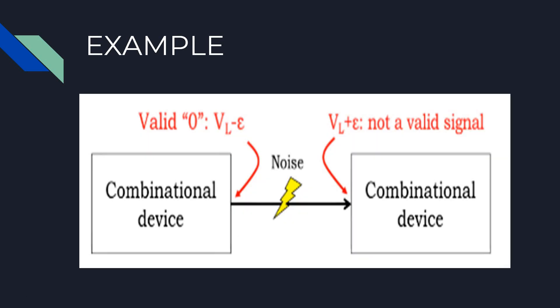Consider two combinational devices where circuit 1 on the left is trying to send a digital zero to circuit 2 on the right.